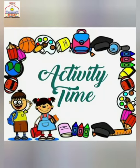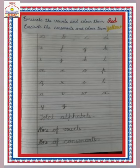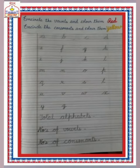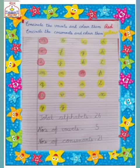Come, let's do an activity! Here we have A to Z. You have to count all the alphabets — the number of vowels and the number of consonants — and then encircle the vowels in red color and encircle the consonants in yellow color.